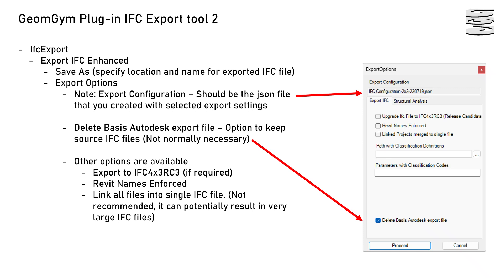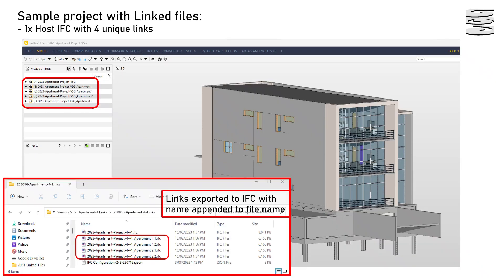That option where it says 'delete basis Autodesk export file' — you can keep those files if you want but they're really unnecessary. The end result shows all the IFC files in the directory. You can see there are four files which are the linked files, and those link files have the linked file names appended as well. So there are five files in total — four links and the host file.